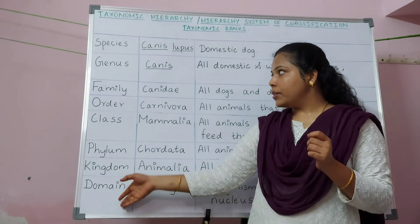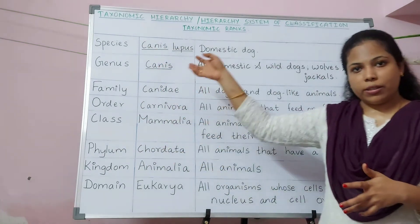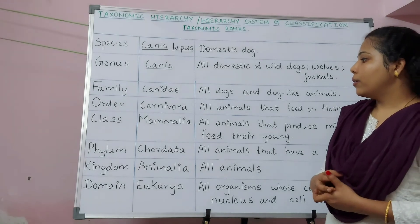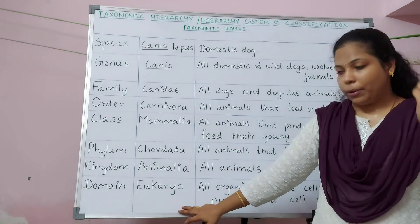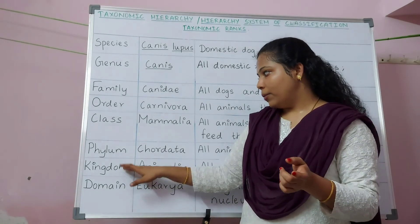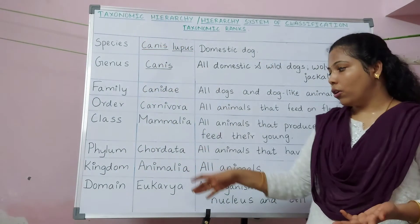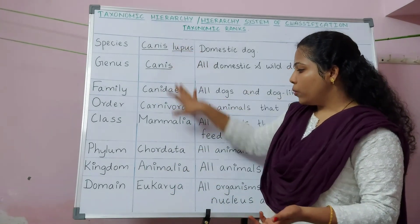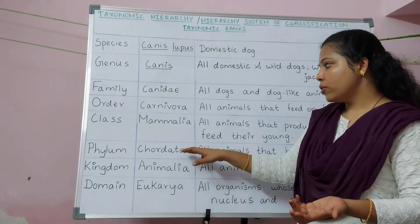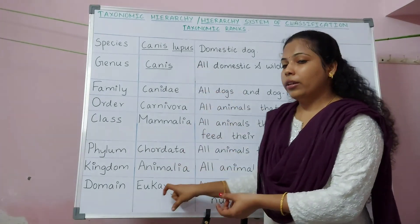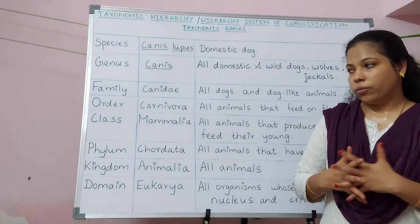As we move across the taxonomic ranks, the specificity increases. The terms that represent domain, kingdom, phylum, class, order, family, genus, species, and subspecies are called taxon. For example, Eukarya is a taxon, Animalia is a taxon. The word or term used to describe a taxonomic rank is called a taxon.